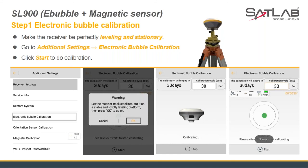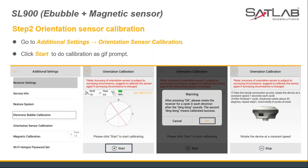Let's briefly explain how to perform the calibration. First, the electronic bubble calibration: keep the receiver level and stable, then click Start in SETServe's additional settings electronic bubble calibration option. The receiver will automatically complete the calibration and the software will confirm completion. Second, the orientation sensor calibration: click Start in the additional settings orientation sensor calibration option. The software will show the calibration steps with pictures illustrating how to proceed.